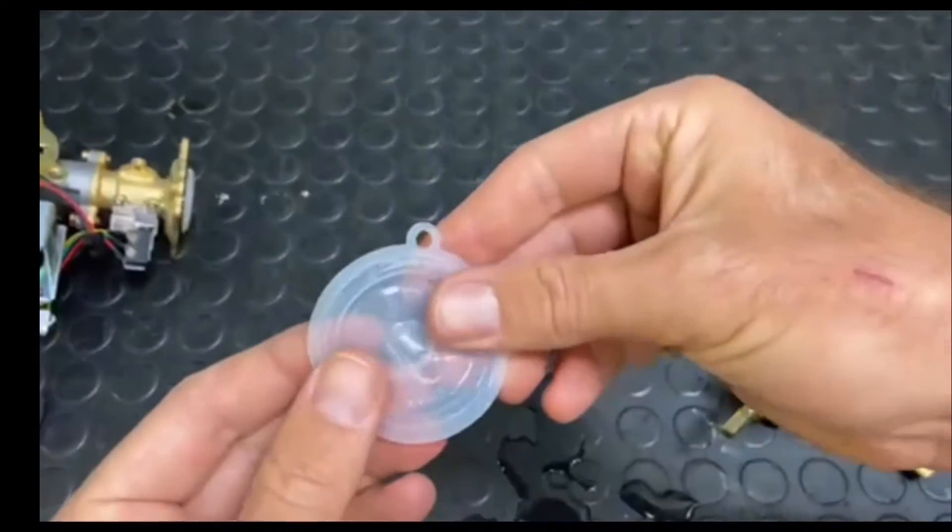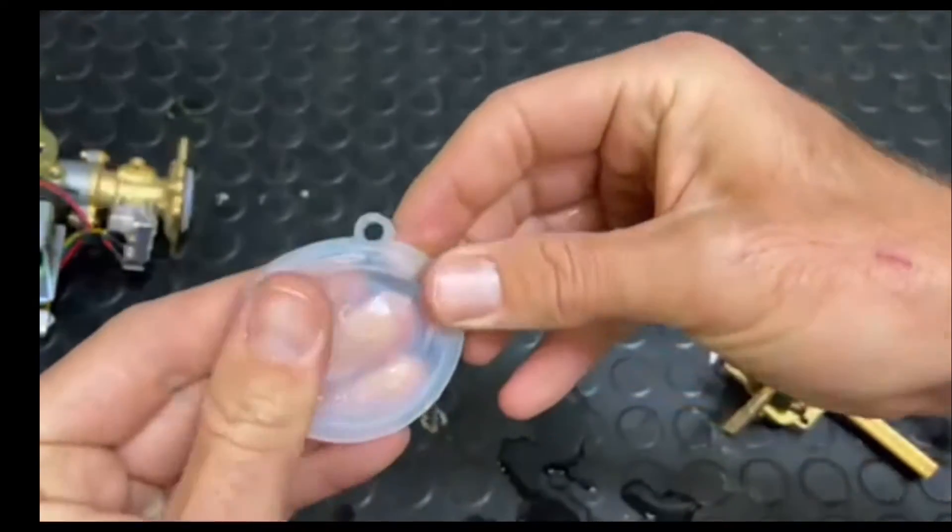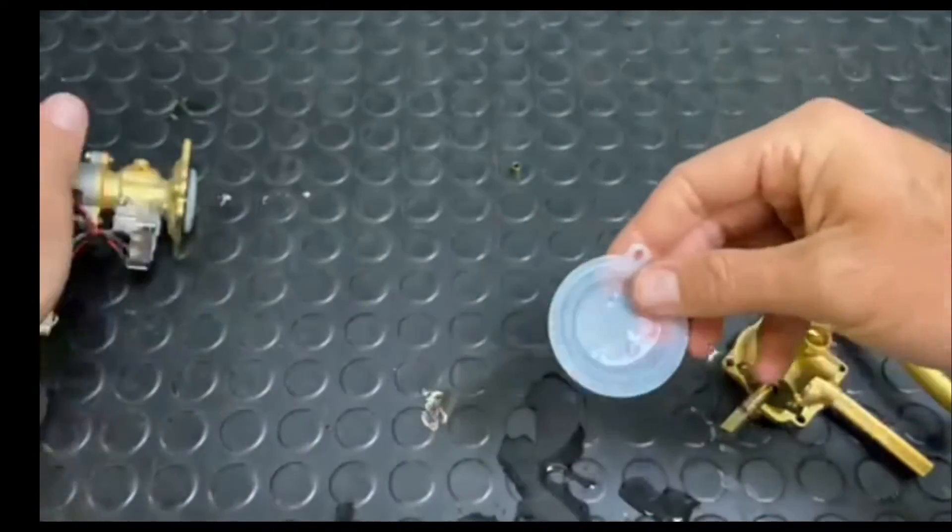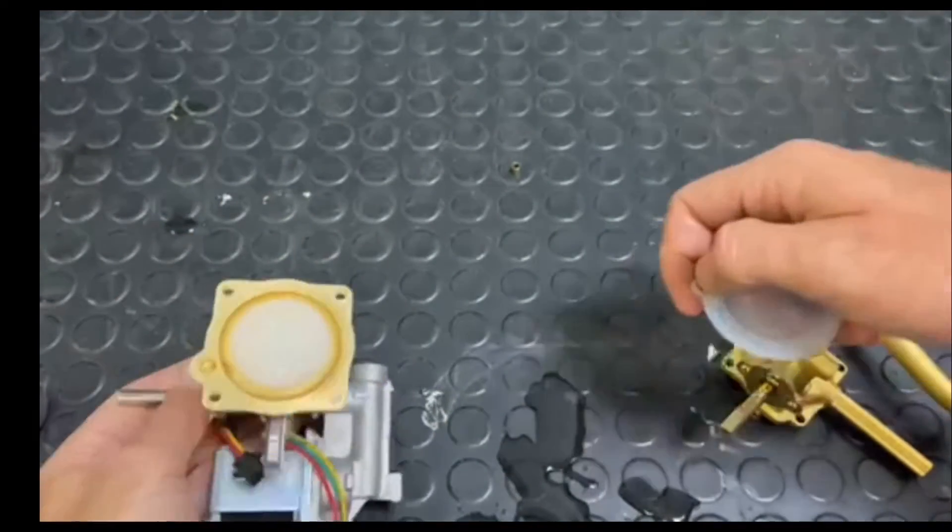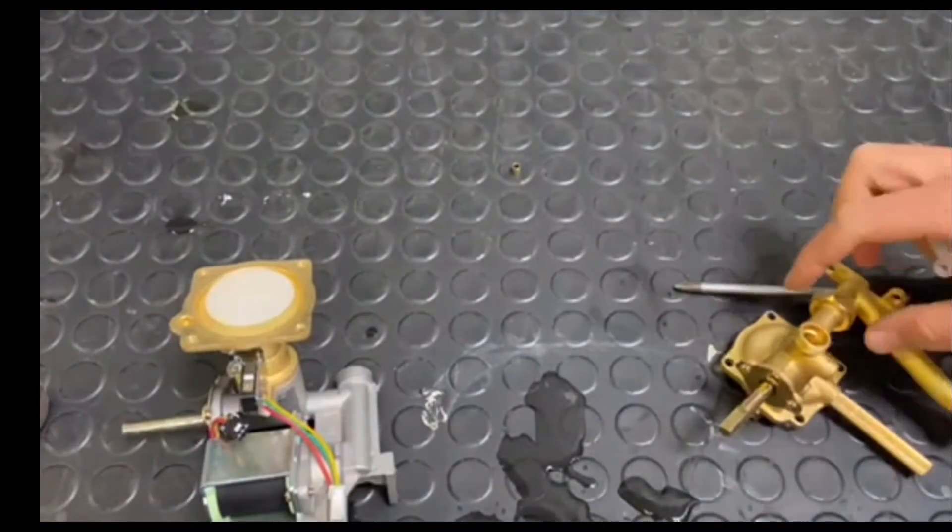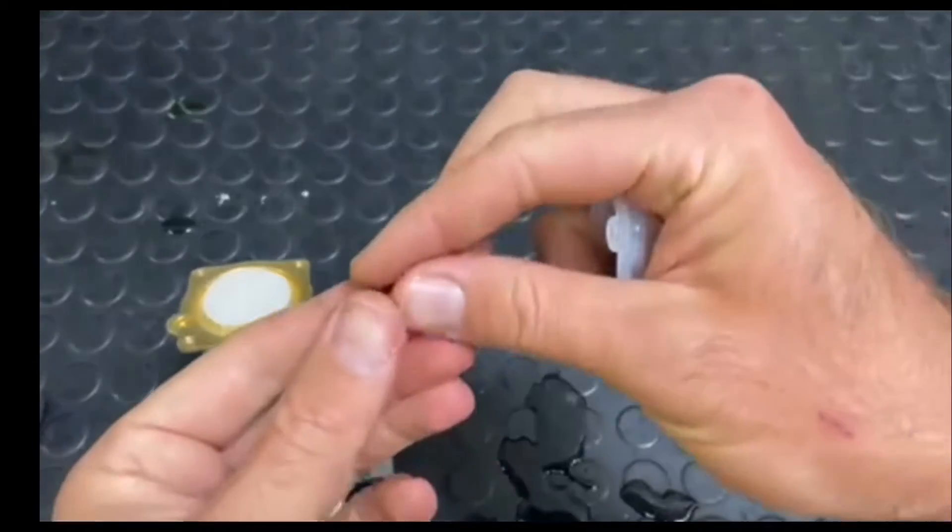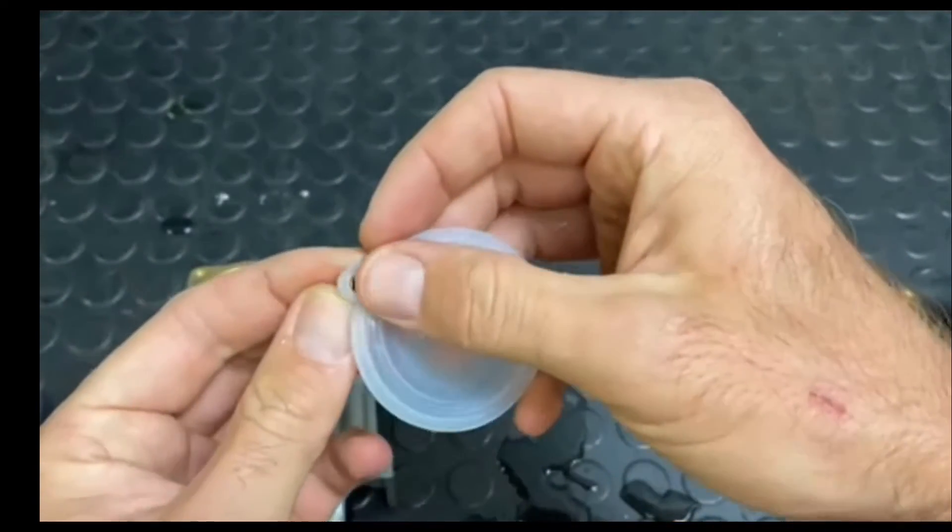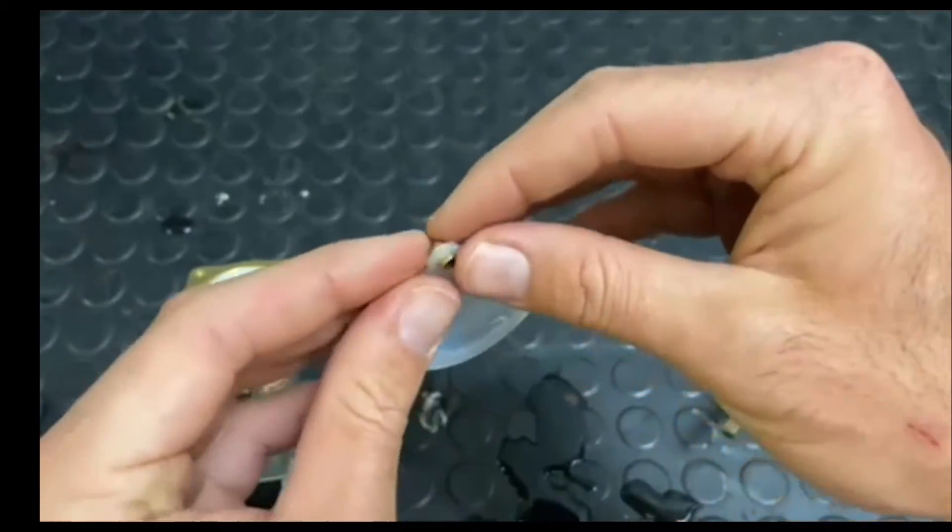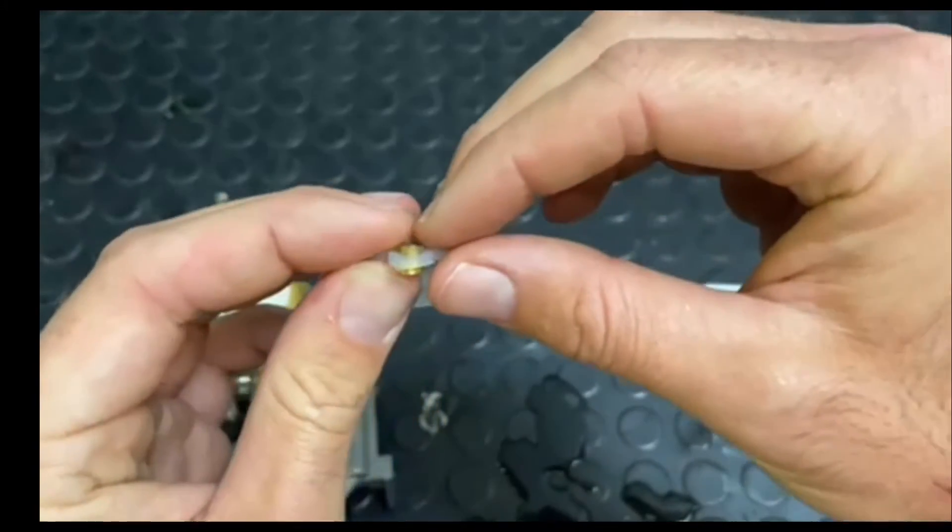Then you will get your new diaphragm which you will replace, and just pay attention to which way the diaphragm goes onto the diaphragm housing. Don't forget your little brass pusher, which just helps the diaphragm stay seated in the diaphragm housing.